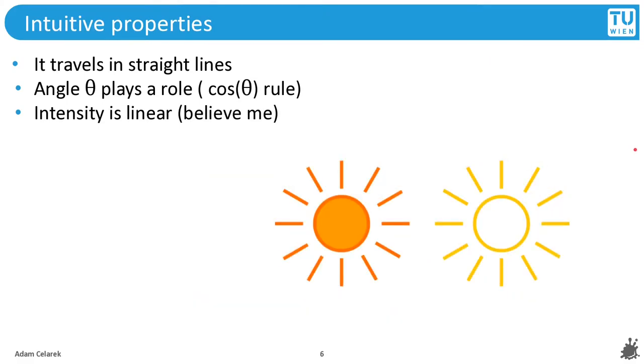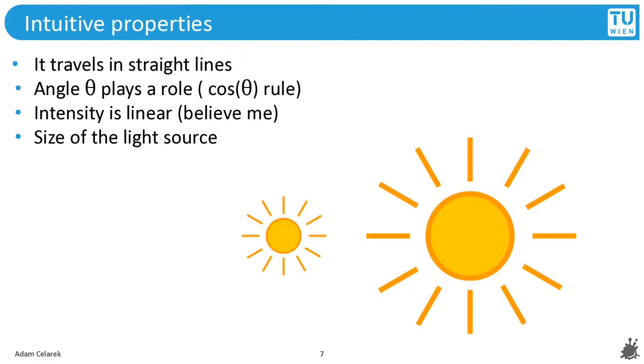Next, intensity obviously that plays a role. A brighter light gives a brighter surface. This relation is linear, which also shouldn't be surprising.